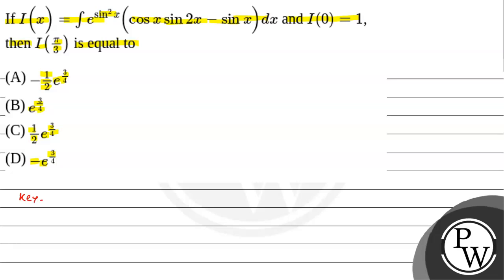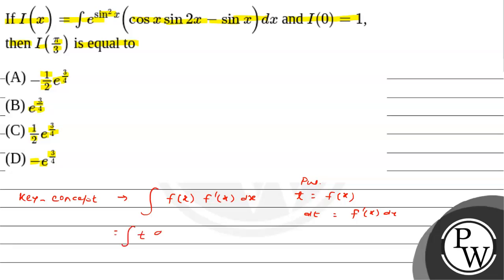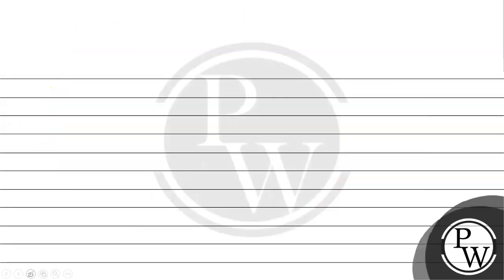Before starting the problem, we will talk about the key concept upon which we will solve it. For the formula ∫f(x)·f'(x)dx, put t = f(x) and differentiate both sides to get f'(x)dx. The integral reduces to ∫t dt, which becomes t²/2 + c, and substituting back gives f(x)² / 2 + c.